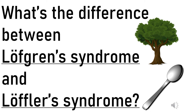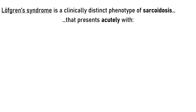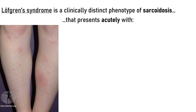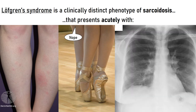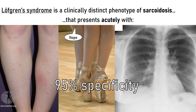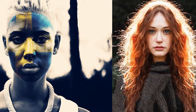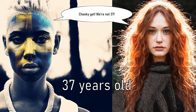What's the difference between Lofgren's syndrome and Lofler's syndrome? Lofgren's syndrome is a clinically distinct phenotype of sarcoidosis that presents acutely with the classic triad of erythema nodosum, acute arthritis typically in the ankles, and bilateral hilar lymphadenopathy. This triad has a 95% specificity when present. It's more common in females and more frequent in those of Scandinavian and Irish heritage, with a median age of onset of 37.